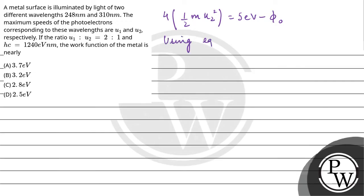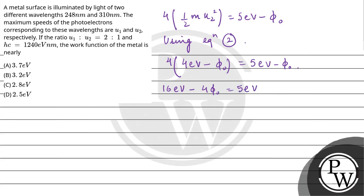Now using equation 2, substituting ½mU2² = 4 electron volt minus φ₀: 4 × (4 electron volt minus φ₀) equals 5 electron volt minus φ₀. This gives 16 electron volt minus 4φ₀ equals 5 electron volt minus φ₀. Rearranging: 16 minus 5 electron volt equals 4φ₀ minus φ₀, so 3φ₀ equals 11 electron volt.